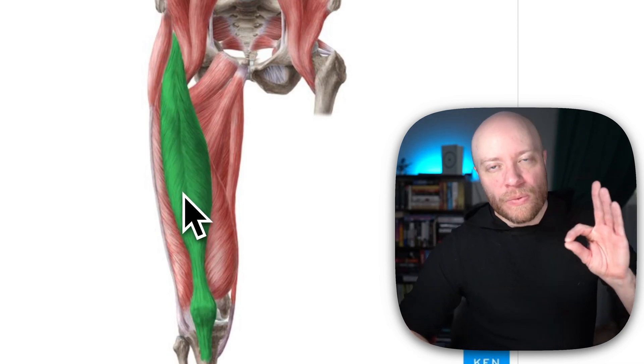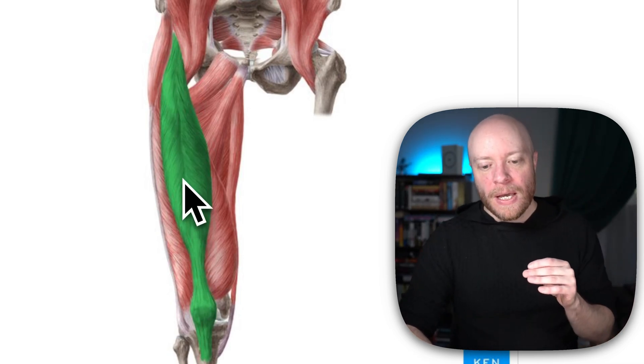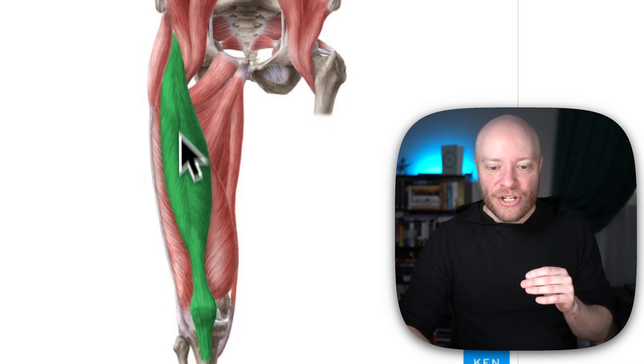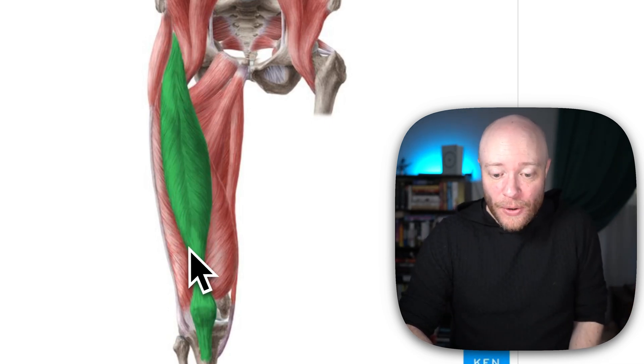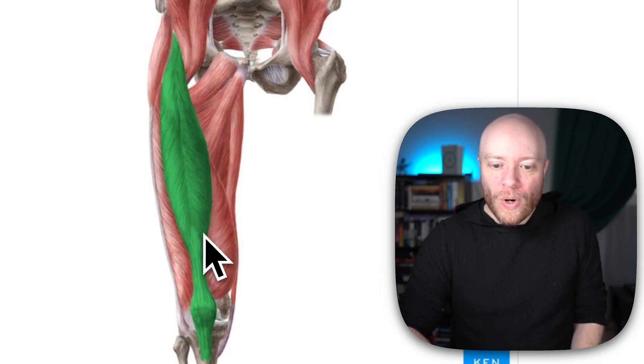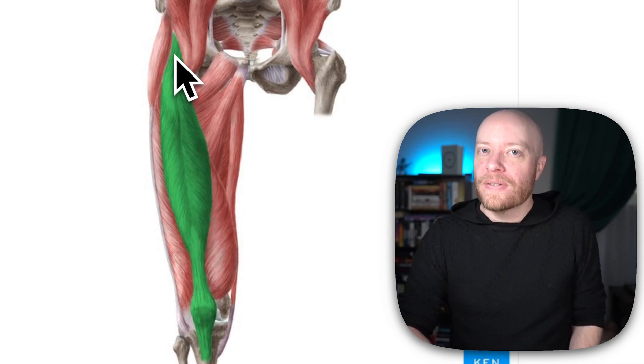But the rectus femoris is unique among the quadriceps because it doesn't attach to the femur at all. The others do. That's their whole point. But the others do not cross the hip, whereas the rectus femoris does.